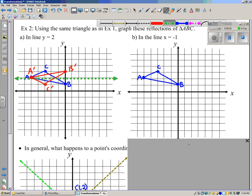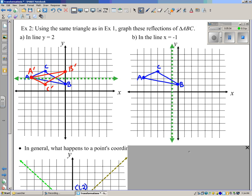x equals negative one is a vertical line. A prime is going to be one, two, three, got to be four units away. Right here. Here's B prime. And C prime is two units away right here.